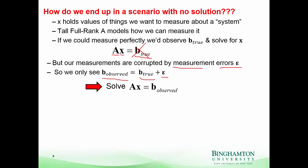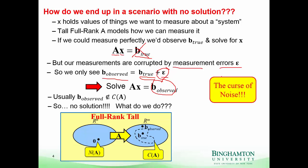What we have is AX equals B_observed. How likely is it that this noise vector moved B out of the column space? Although it's possible that the observed B is still in the column space, the probability of that happening is very, very small. So almost always, virtually every single time, your observed vector will not be in the column space of A, and we've got no solution.